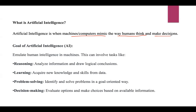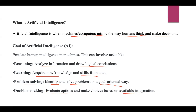The goal of artificial intelligence mainly involves various tasks. The first one is reasoning, where information analysis is done and based on the analysis, logical conclusions are drawn. The next step is learning — acquiring new knowledge and skills from data. After that, problem solving, where the system identifies the problem and based on acquired knowledge, tries to solve it in a goal-oriented way. The fourth one is decision-making, where options are evaluated and choices are made based on available information.